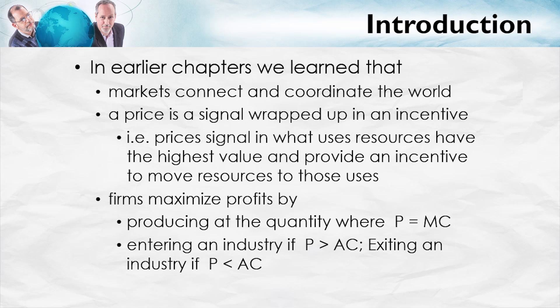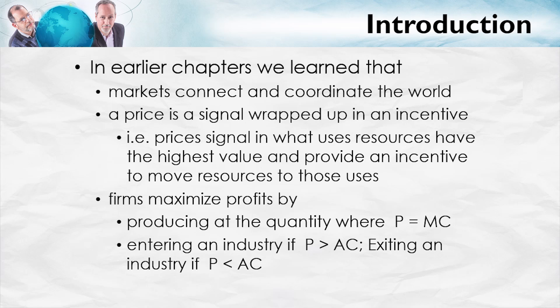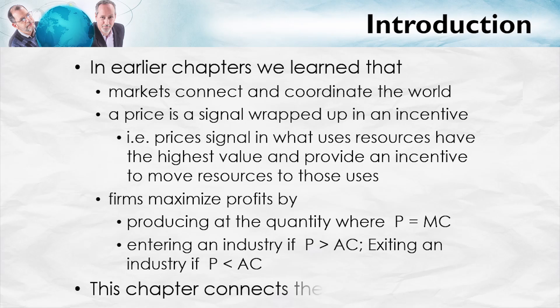We also learned that firms maximize profits by doing two things. First, by producing at the quantity where price is equal to marginal cost. And second, by entering an industry when there are profits — when price is greater than average cost — and by exiting an industry when there are losses — when price is less than average cost.